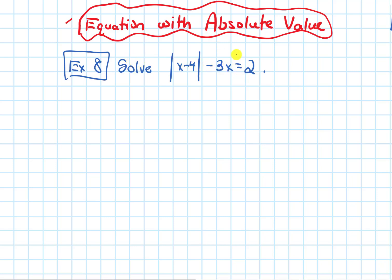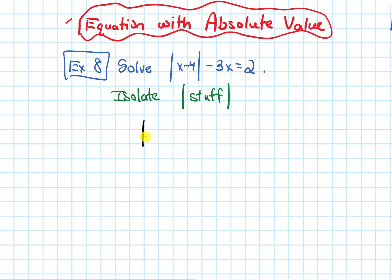If I have an equation with an absolute value, I want to begin by isolating the absolute value of whatever is inside it. So I'll keep the absolute value of x minus 4 where it is, but move the minus 3x to the right. Adding it gives us this equals 3x plus 2.